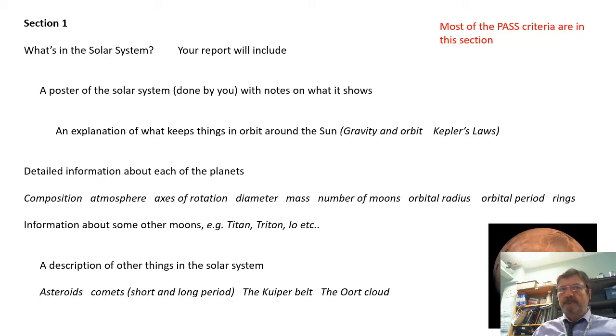You should do detailed information about each of the planets, okay? And there's a big list of stuff which you should include: their composition, their atmosphere, the axis of rotation, how much tilted it is, their diameter, their mass, the number of moons, orbital radius, orbital period, if they have rings or not. All of that, like I would say about half a page for each planet.